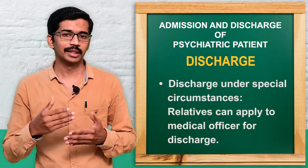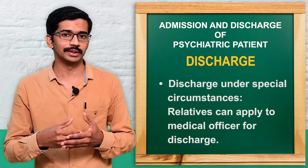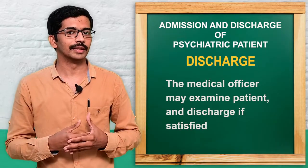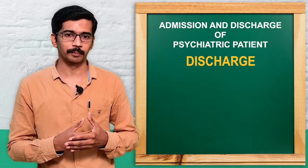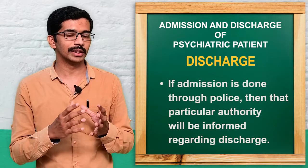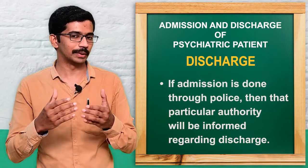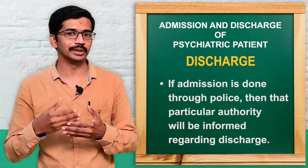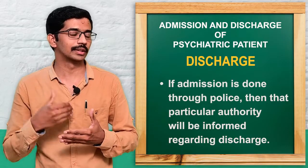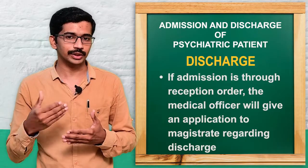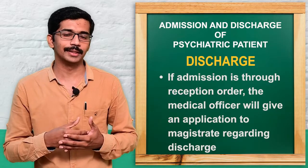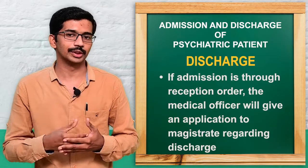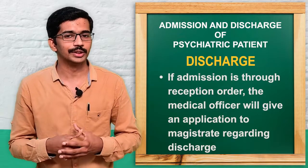For admission under special circumstances, the relatives can request the medical officer for discharge. The medical officer, with the help of a board of visitors or supporting psychiatrists, will decide on discharge. For reception order cases through police, the concerned authority will be informed to ensure family members will take care of the patient. If admitted through a magistrate, the medical officer will send the application to the district magistrate, and the magistrate, after examination, will discharge the patient.